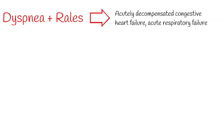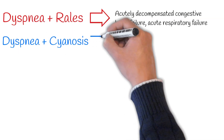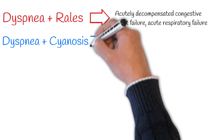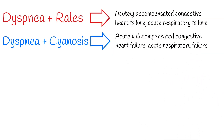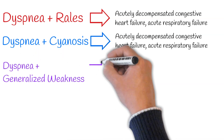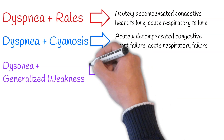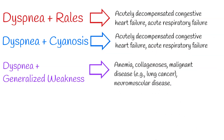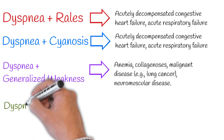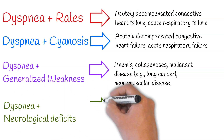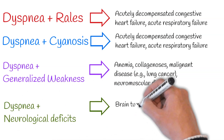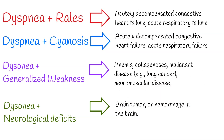If there is cyanosis alongside dyspnea, it can indicate respiratory failure, a heart defect with right-to-left shunt, or Eisenmenger syndrome. Shortness of breath with exhaustion, generalized weakness, exercise intolerance, and muscle weakness can be caused by anemia, collagenosis, malignant disease such as lung cancer, or neuromuscular disease. If dyspnea is accompanied with neurological deficits or brainstem signs, it can indicate a brain tumor or hemorrhage in the brain.